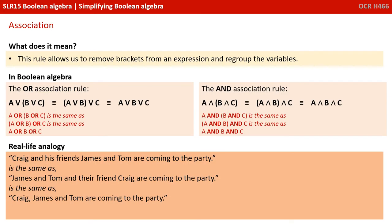Association: this rule allows us to remove brackets from an expression and regroup the variables. There are two versions of this rule: the OR association rule and the AND association rule. We covered the real life analogy of Craig and his friends James and Tom.